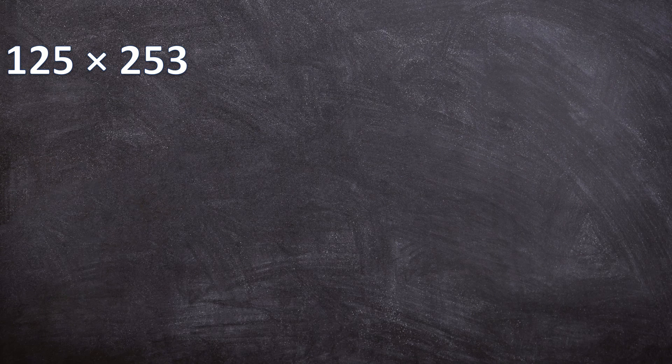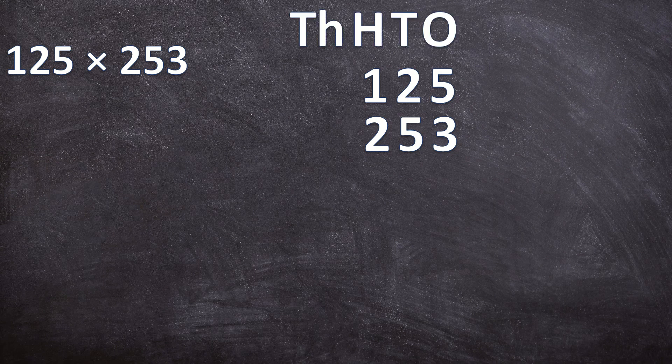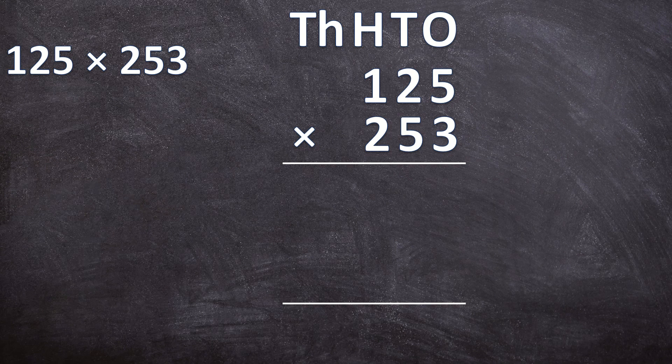Here we have 125 times 253. The first thing you need to do is write them neatly underneath each other: 125 and 253. Make sure you put your ones underneath each other, your tens underneath each other, and your hundreds underneath each other. This makes it a lot easier and helps you not get confused. Then you write your multiplication sign and your two lines — the two lines should be three spaces apart, and I'll explain why.